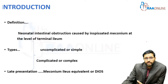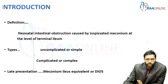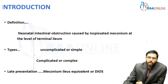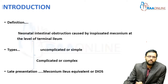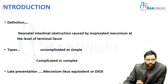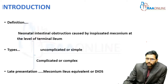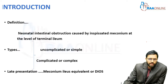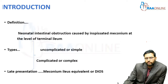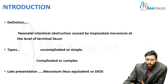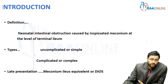So what exactly is meconium ileus? By definition, it is nothing but a neonatal intestinal obstruction caused by inspissated meconium at the level of the terminal ileum or distal ileum. There are two different types: uncomplicated or simple meconium ileus, and complicated or complex meconium ileus. Simple meconium ileus is always much more common, but complicated meconium ileus is more commonly detected antenatally.